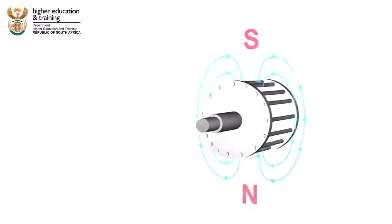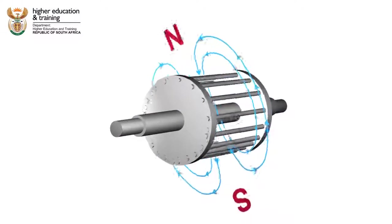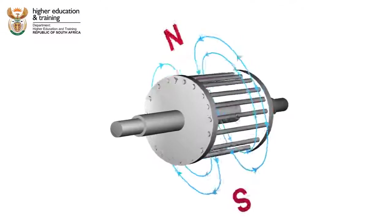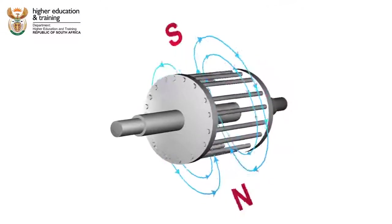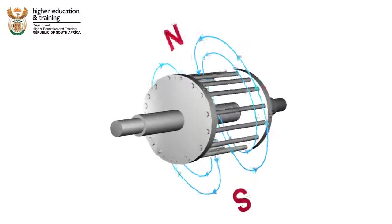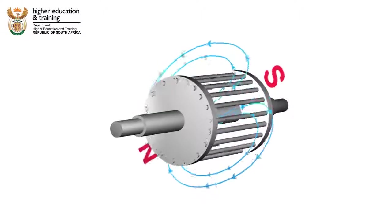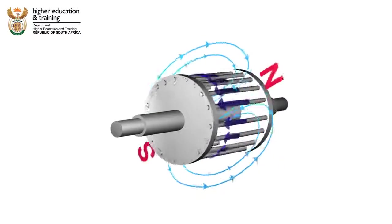Because the field is always changing relative to the rotor, it induces current in the rotor bars. The direction of this current can be determined using the right-hand rule. But we also know that this induced current in the rotor will create a rotor magnetic field.